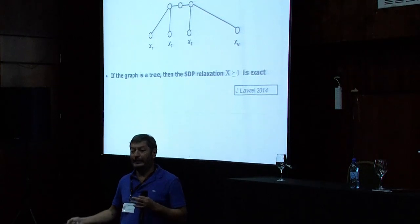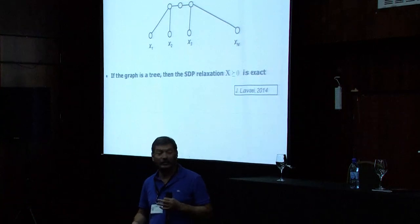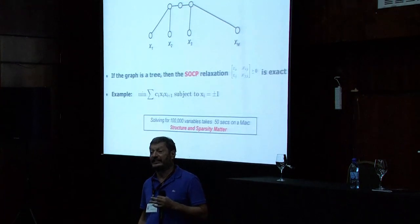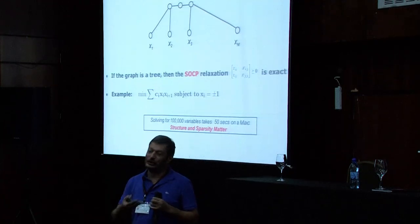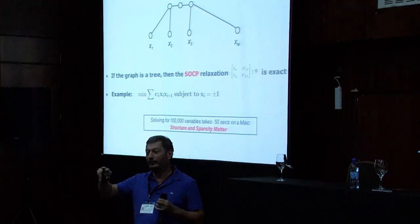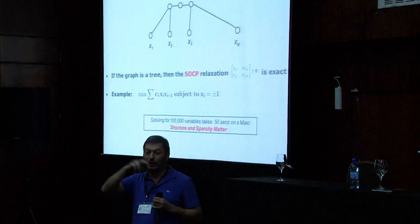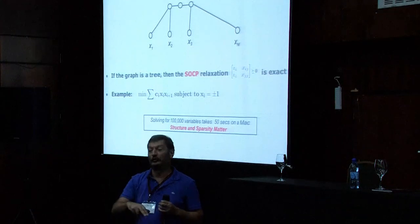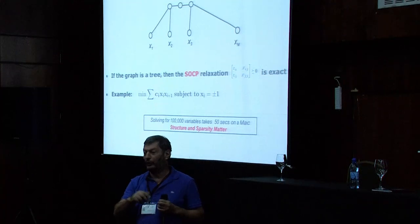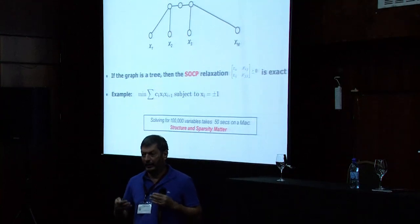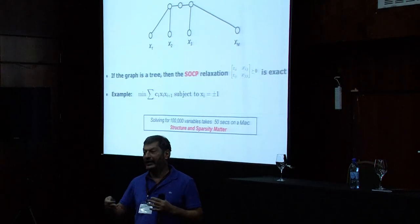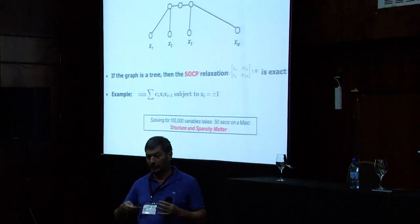If the graph is a tree, just drop the constraint, solve the QCQP, and you're done — you're guaranteed to get the optimum. But it gets even better, because SDPs are hard to solve. If the graph is a tree, the second-order cone program relaxation is exact. So instead of having to solve SDPs, you can solve second-order cone programs that are much more efficient. This is how I cooked my example: the problem with the indefinite form over the hypercube has a correlative sparsity graph that is a tree, so I just solve a second-order cone program and can handle 100,000 variables.